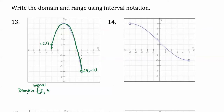If you have an endpoint that is open — meaning it's a hole in the graph and not included in the domain — then we use parentheses. Brackets lock it in and it's defined. Parentheses are for open circles, or if the graph has no ending, like it goes forever to the right toward infinity, that would also be an open-ended interval with parentheses.